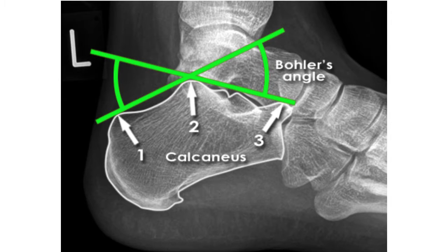From this point, another line is drawn — line three — to the upper edge of the anterior process of the calcaneus. Böhler's angle is normally between 28 and 40 degrees.